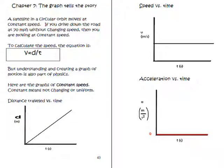But understanding and creating a graph of motion is also part of physics. Here are the graphs of constant speed. Constant means not changing or uniform.